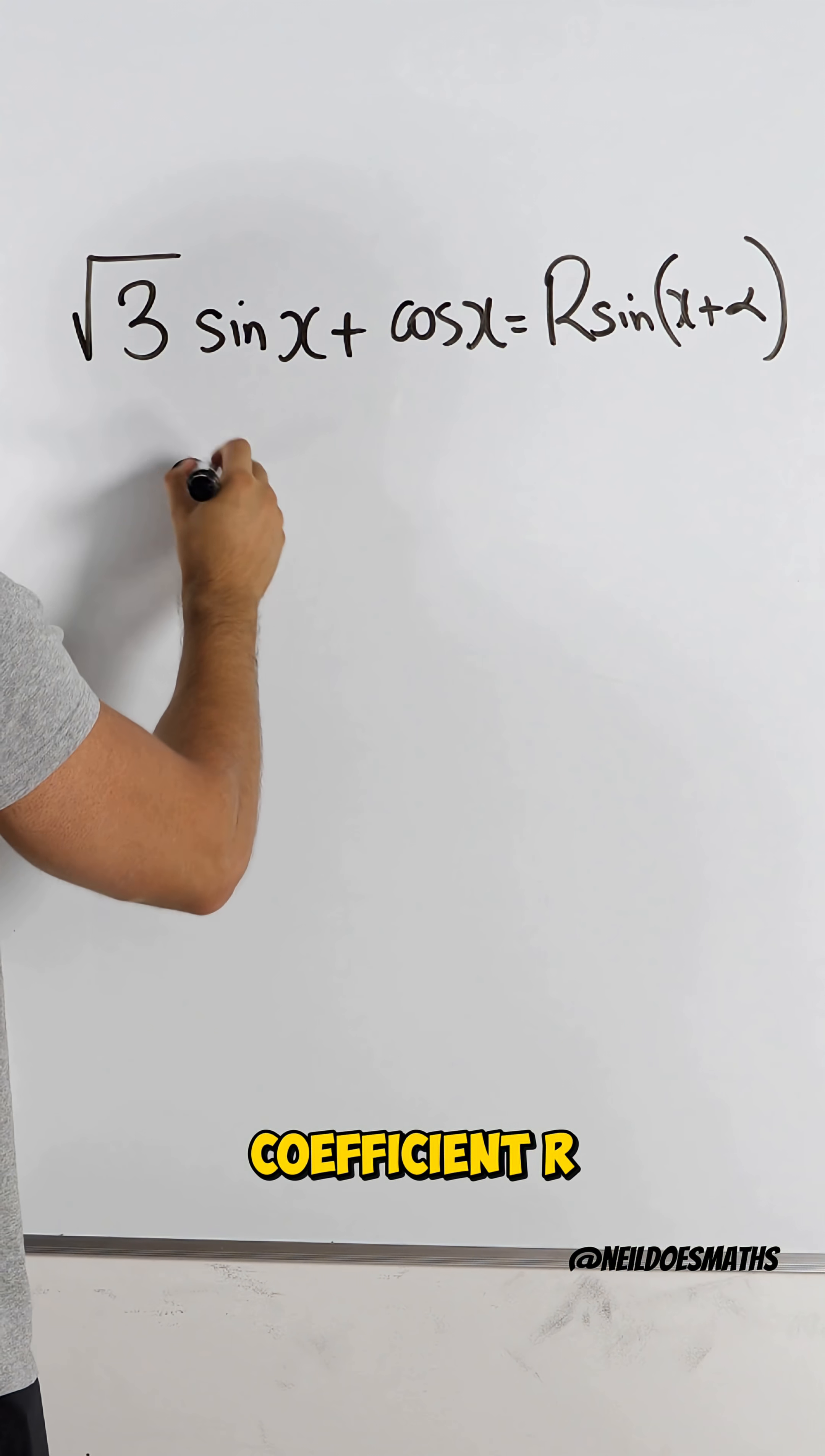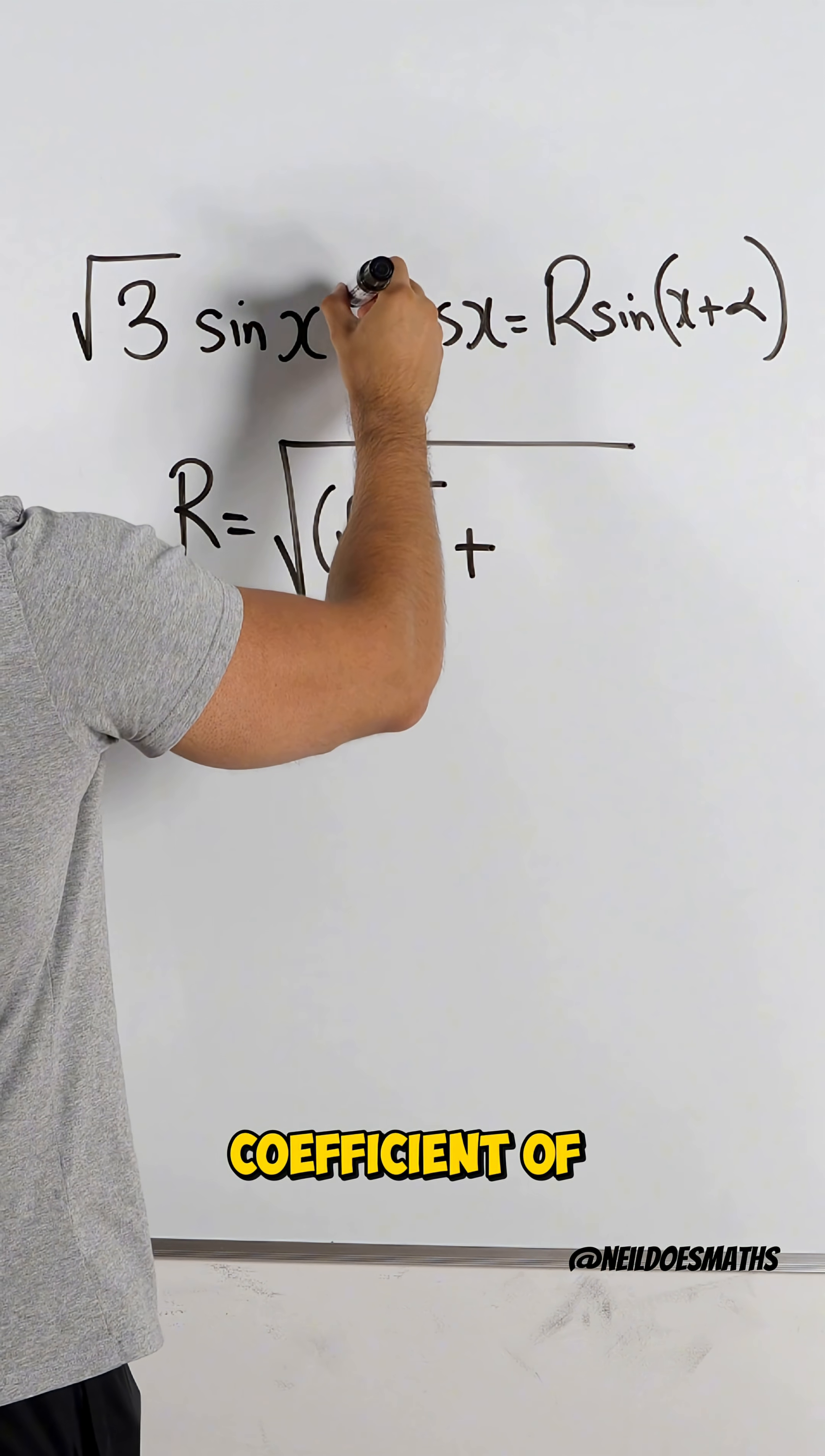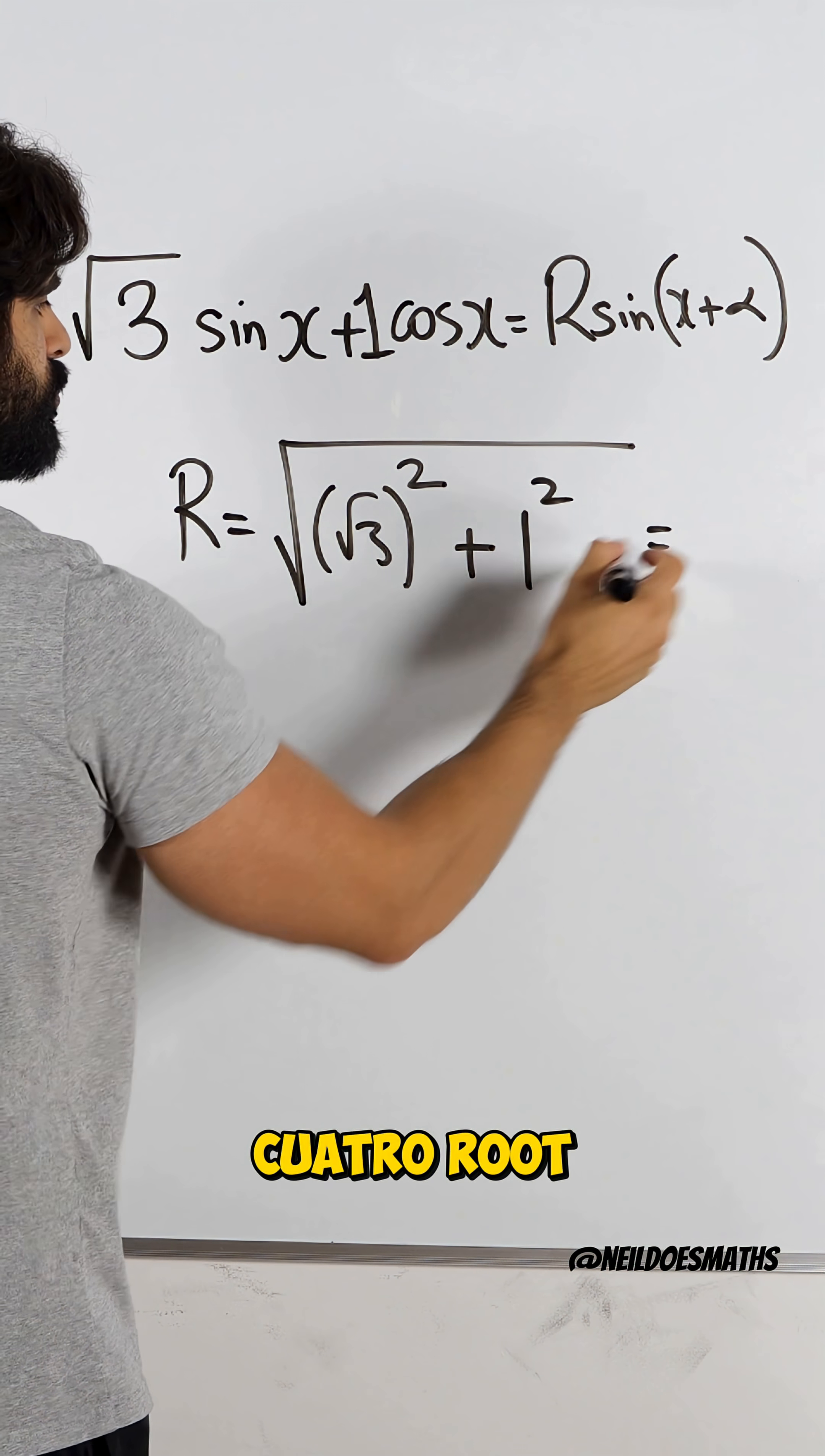To find the coefficient R, all we do is Pythagoras to the coefficients of sine and cos. The coefficient here is root three. We need to square that, and then the coefficient of cos is uno. Root three squared is three, plus one is four. Root that is two.